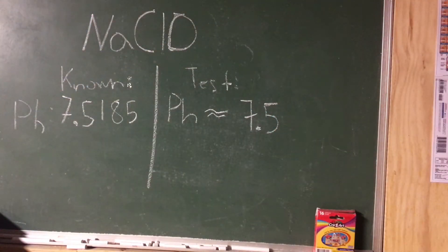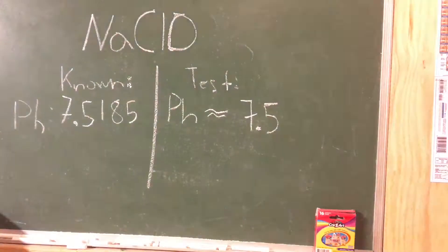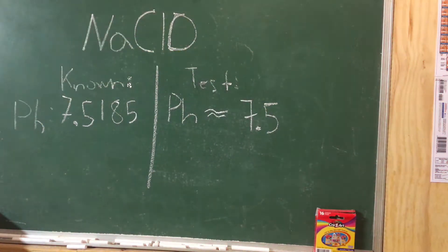After referring to Wikipedia, which I don't understand why people don't like, it is 7.5185. My tests, I estimated about 7.5, which is very close. Very close, actually. A very good estimate.